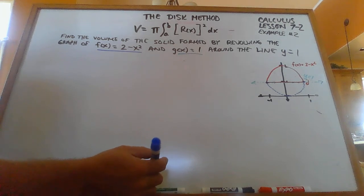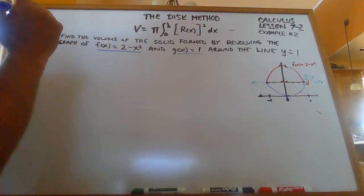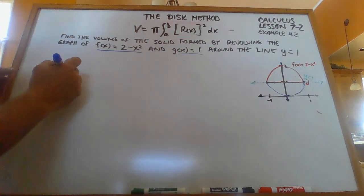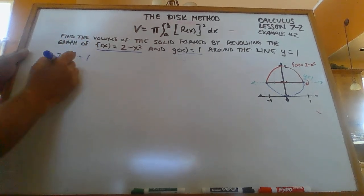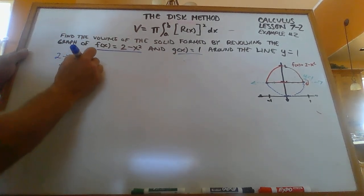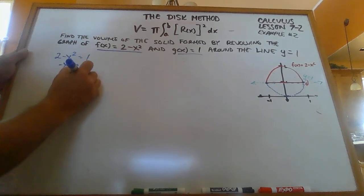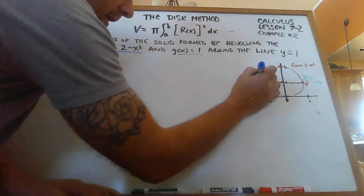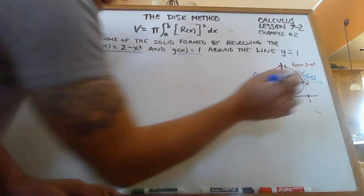And the very first thing we want to do is we want to take these two equations and set them equal to each other and determine what are these two points right there where they intersect. So 2 minus x squared equals 1. And so negative x squared equals negative 1. x squared is 1. x is plus or minus 1 when we square root it. So this is the point negative 1, 1. And this is the point positive 1, 1.